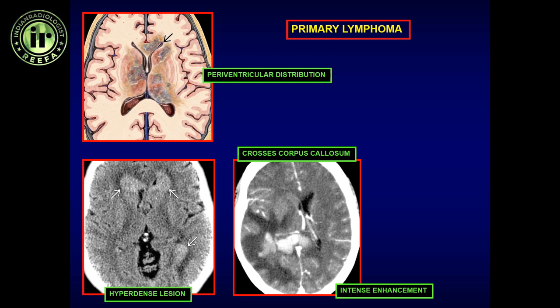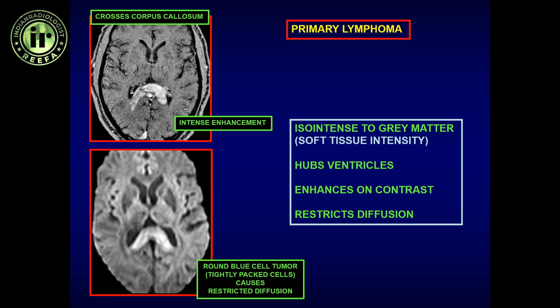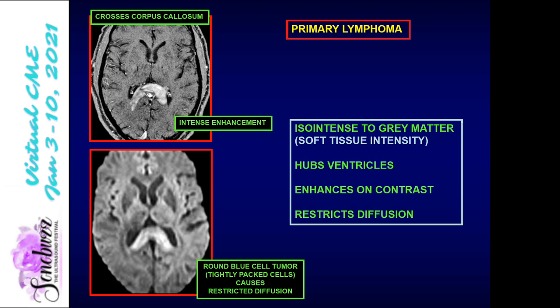The three entities crossing the corpus callosum are: GBM, associated with hemorrhage and central necrosis; demyelinating disease, not associated with this kind of mass effect or intense enhancement; and lymphoma — a mass lesion on MRI along the posterior corpus callosum with intense enhancement and restricted diffusion. Restricted diffusion is a hallmark of round blue cell tumors: germinoma, lymphoma, and primitive neuroectodermal tumors. These intraparenchymal mass lesions enhance and show restricted diffusion due to their tightly packed nature and high nuclear-to-cytoplasmic ratio.